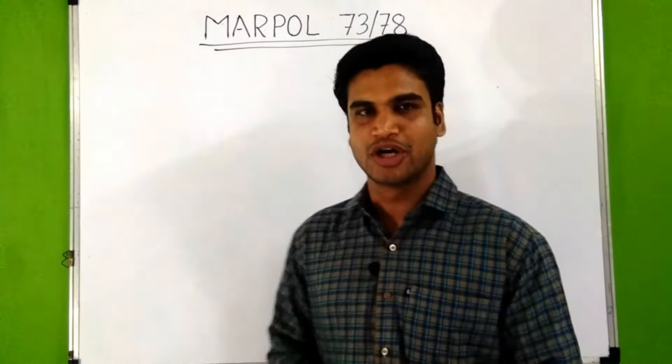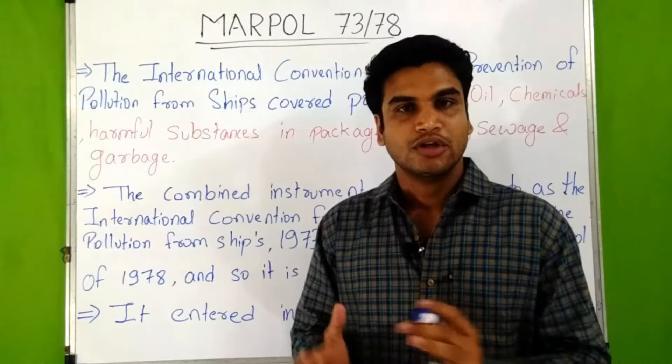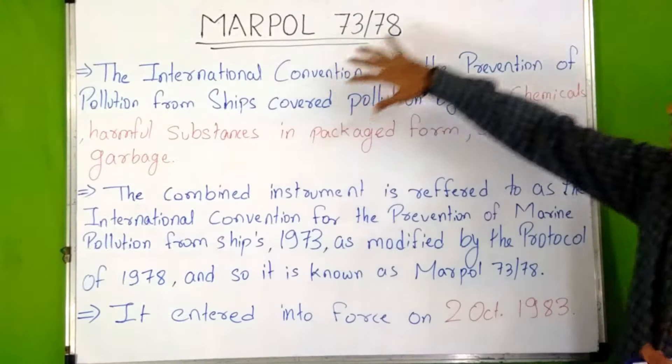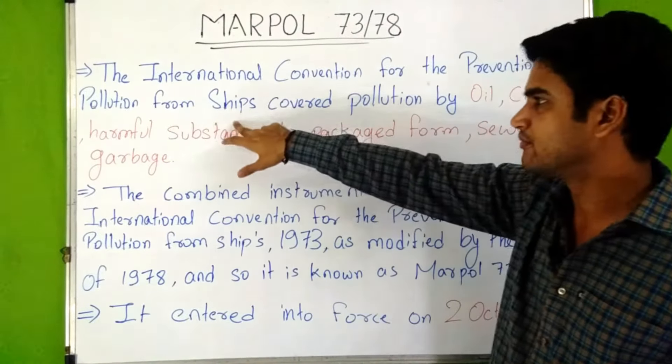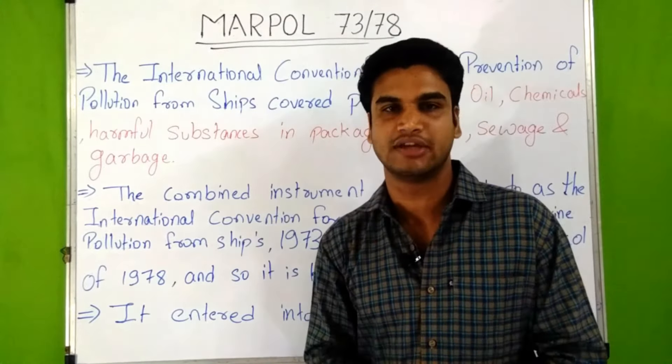MARPOL 73/78, known as the International Convention for the Prevention of Pollution from Ships, covers pollution by oil, chemicals, harmful substances in packaged form, sewage, and garbage. These are some of the main causes of marine pollution by ships. It also includes some noxious liquid substances.